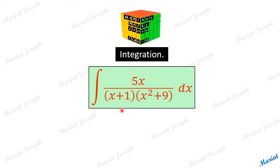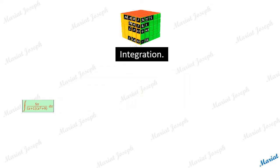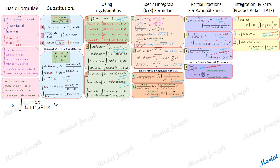Integrate 5x upon (x+1)(x²+9) with respect to x. With reference to various types, let's now try to integrate this new function. The integrand here is a rational function, that is a polynomial upon another polynomial.